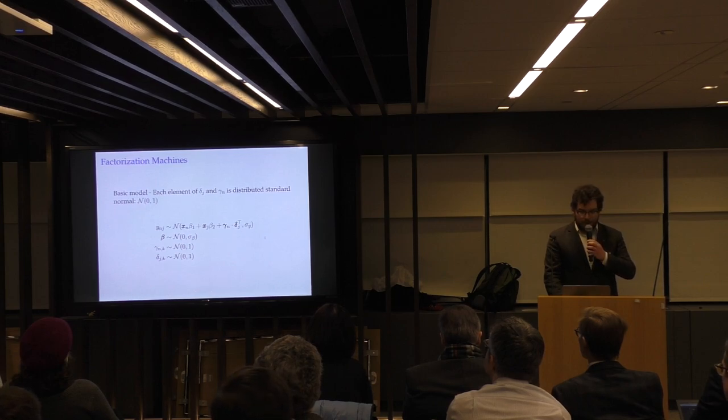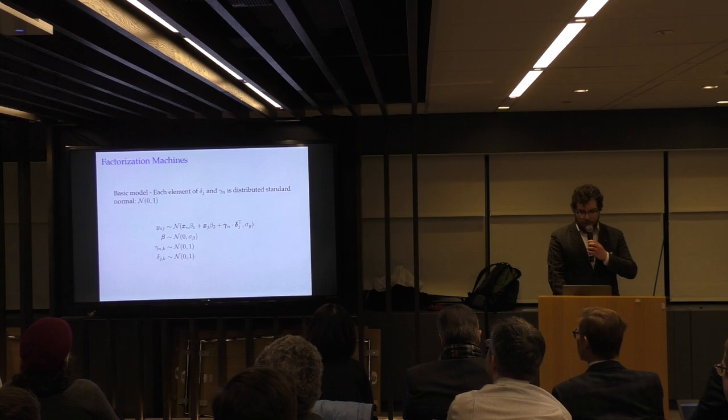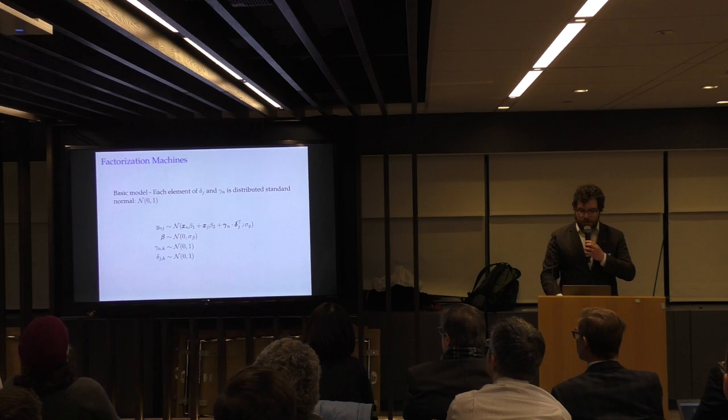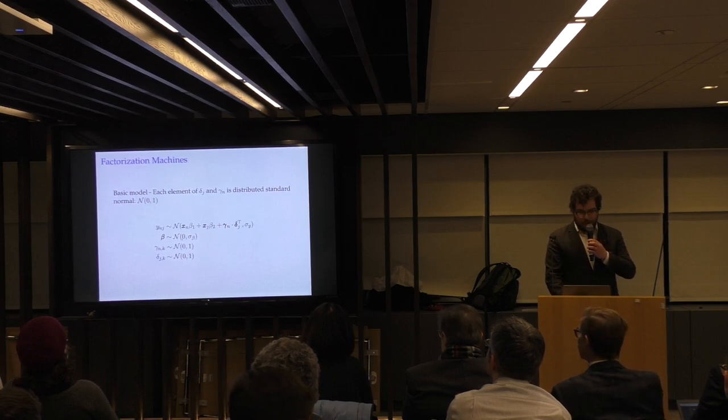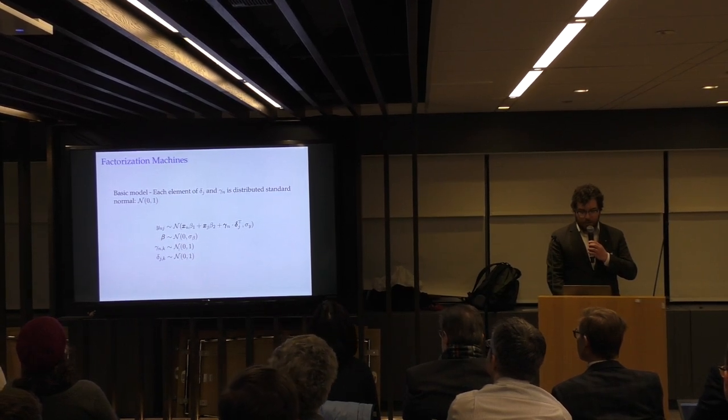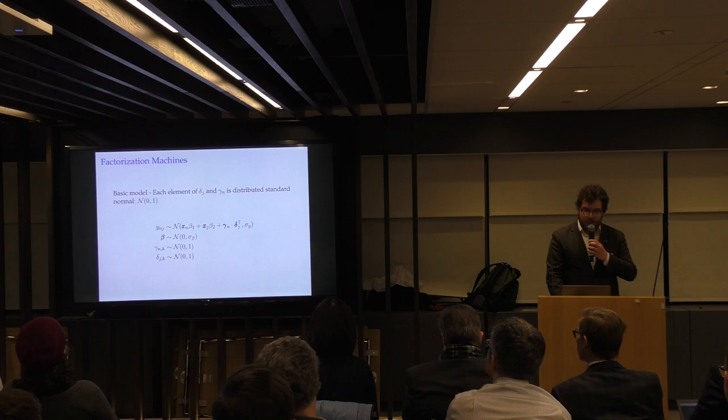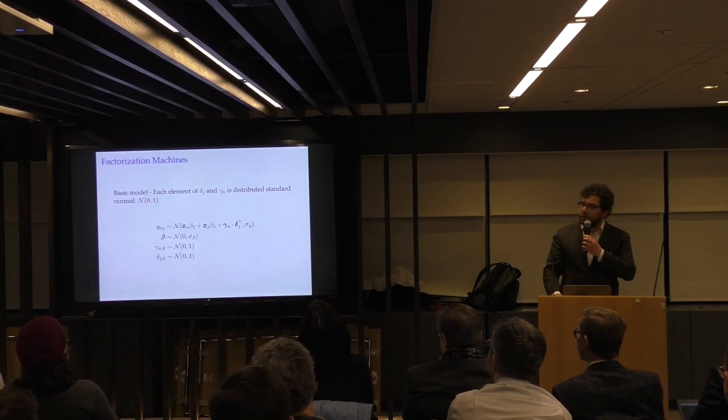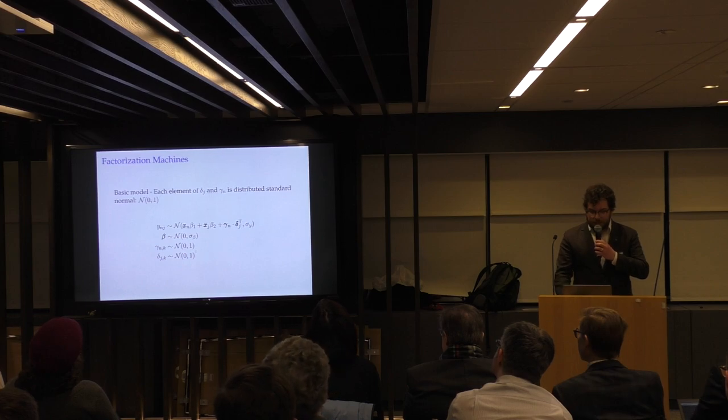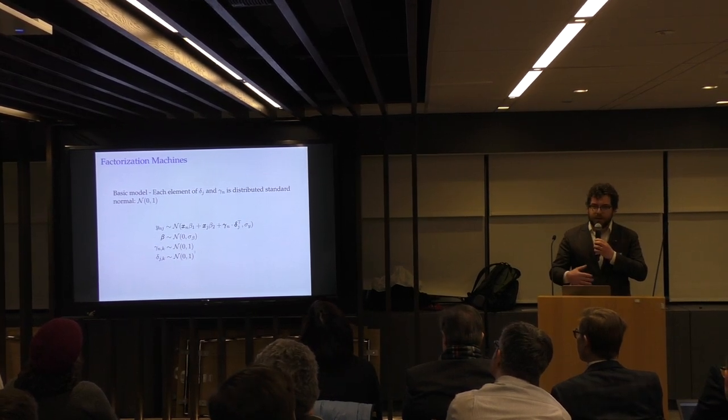And so the basic factorization machine model here, we have our outcome model, which is normally distributed. We have our two main effects. We have our dot product. And here throughout this, unless I otherwise note it, I'm assuming our y is normally distributed and continuous. And you have a standard deviation. Your beta coefficients on your main effects are distributed normally with a mean of zero in some standard deviation. And then your interact, the elements of your factorization matrix are distributed normally with a mean of zero and a standard deviation of one. All these slides will be available online. And I think they're available now, actually. So each element of this factorization matrix is distributed normally. And we're assuming no structure about their correlation here.